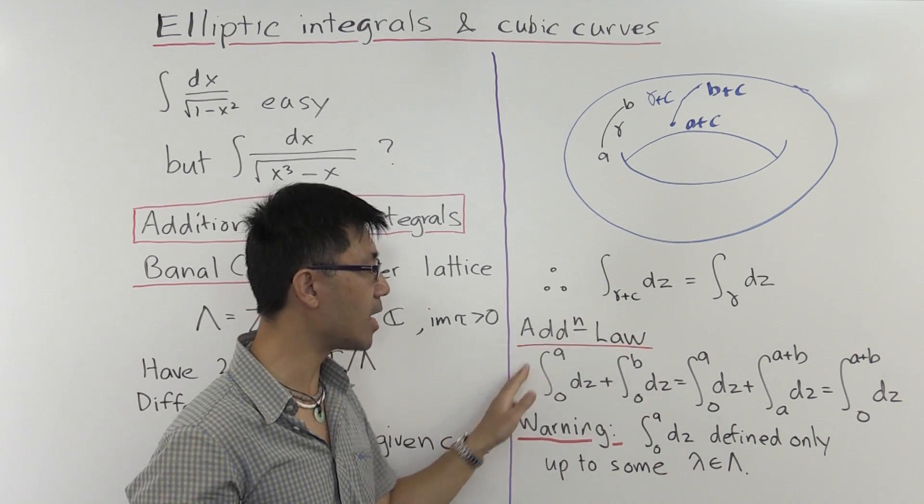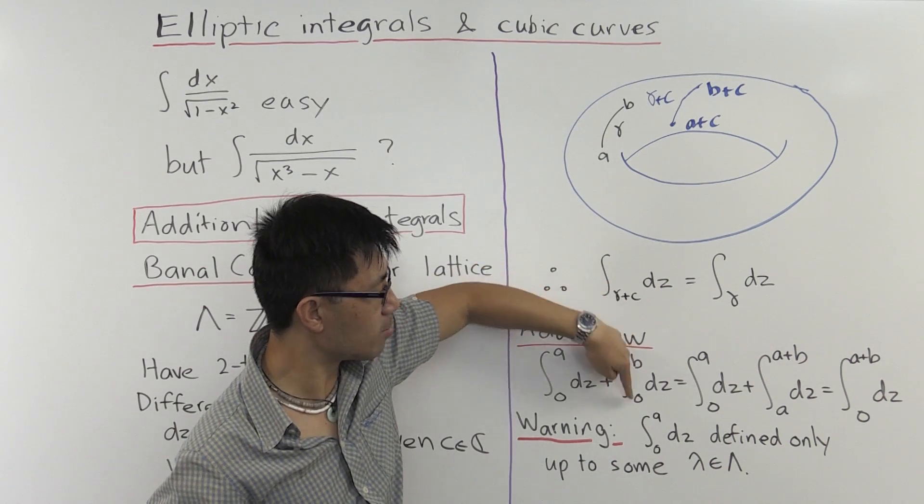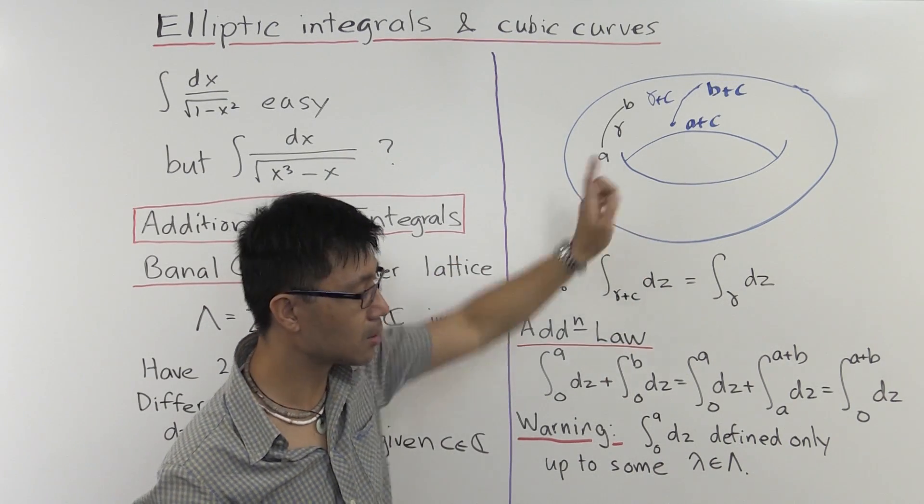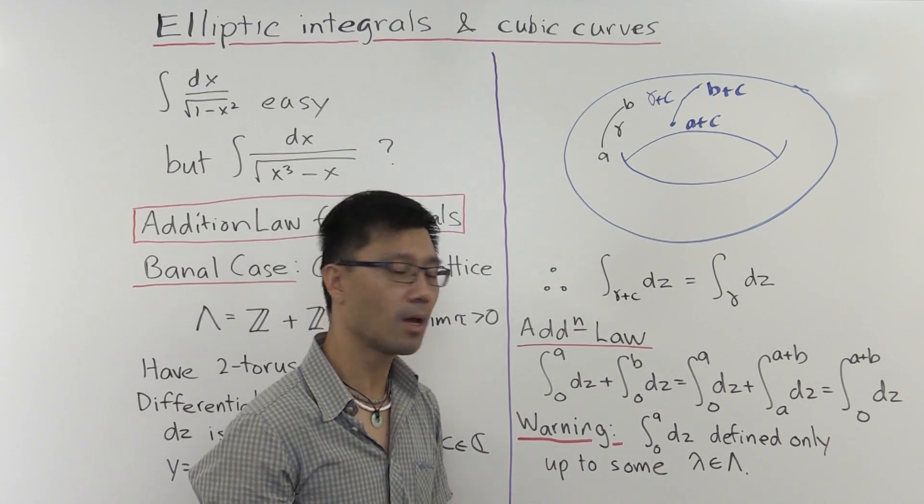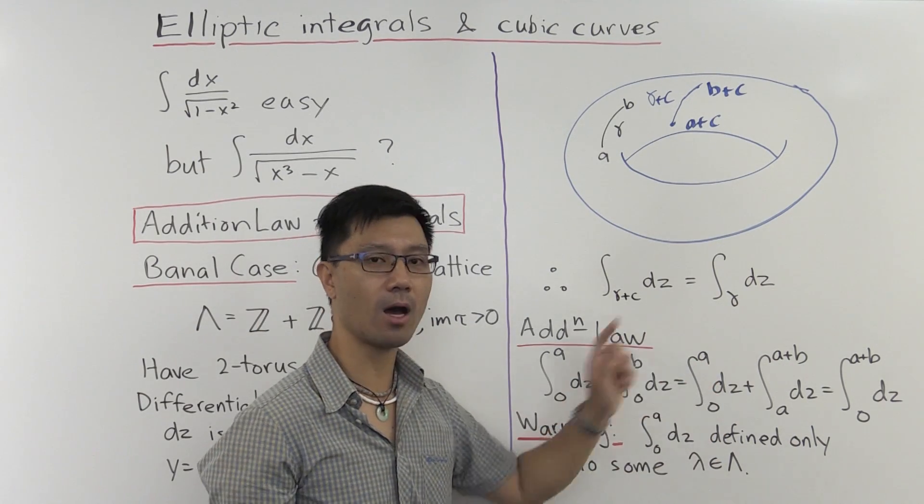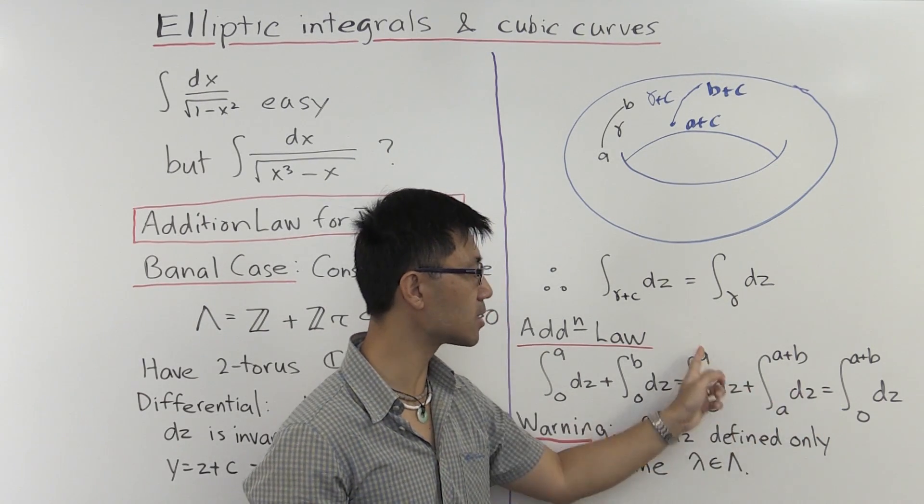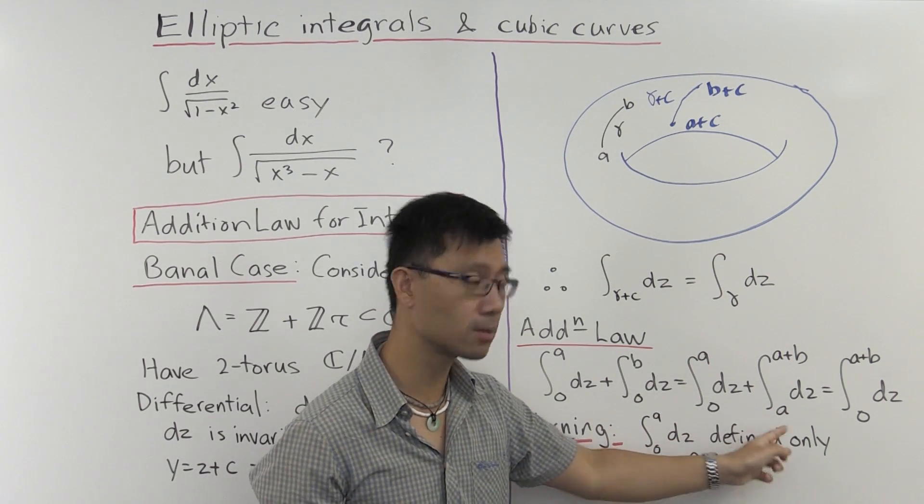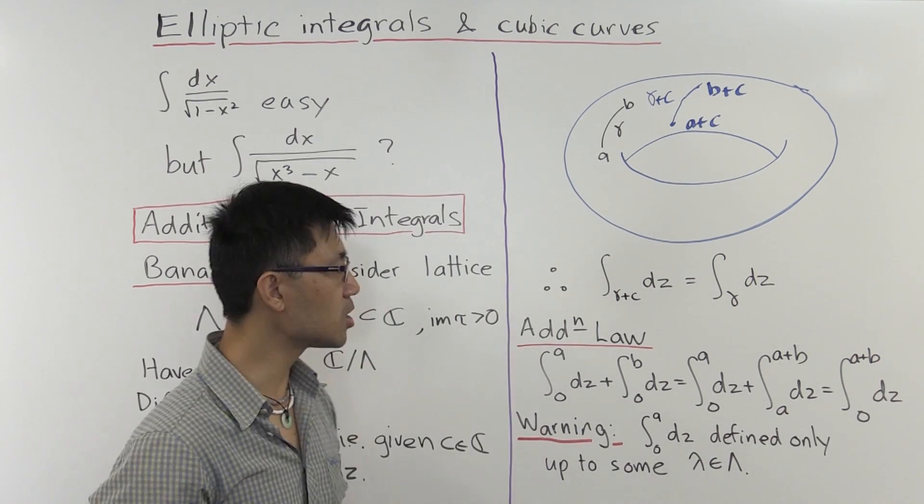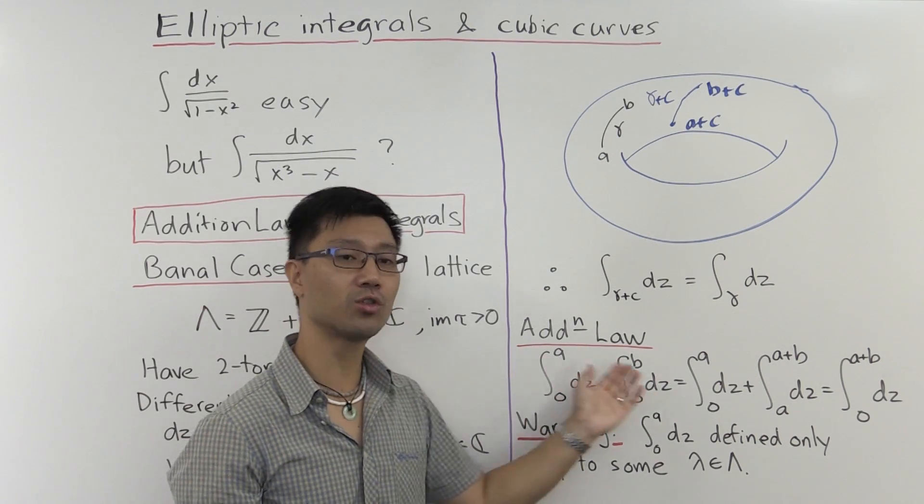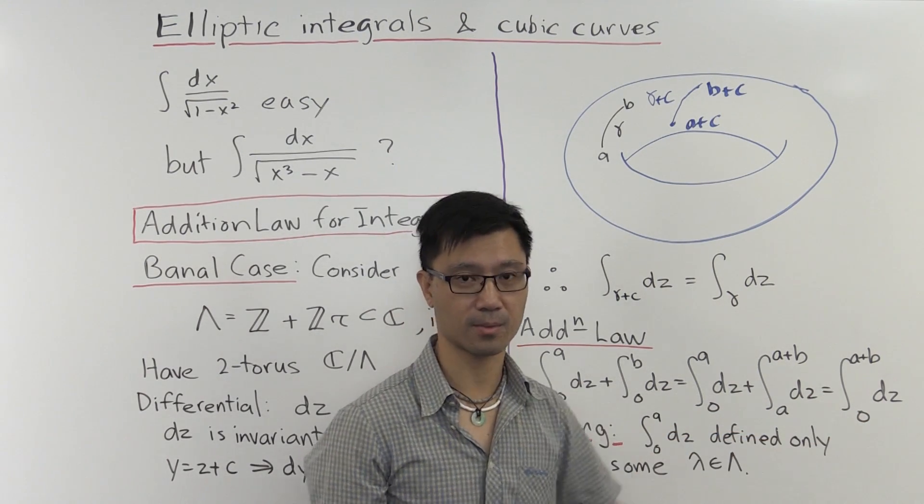I want to express this as a single integral. Well, how can I do that? Well, I can shift the path from 0 to b by adding a to it. So instead of going from 0 to b, it goes from a to a + b. That means that I have the sum of the integral from 0 to a now with the integral from a to a + b. And of course, we can easily add these two integrals since this upper limit is the same as this bottom limit to get this as the integral from 0 to a + b. So this addition law allows us to show that the sum of two specific definite integrals equals a third definite integral.